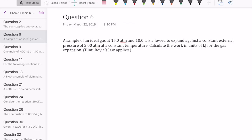Hi everyone, let's take a look at question number six in topic set six. This question says that we have an ideal gas at a certain initial pressure and volume, and it's allowed to expand against a constant external pressure of 2 atmospheres. The question is, what's the work done by the gas from this expansion?